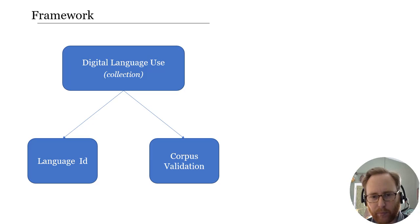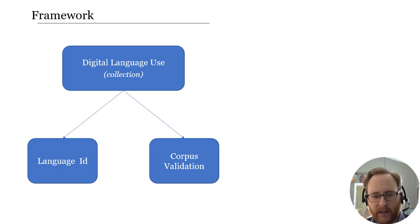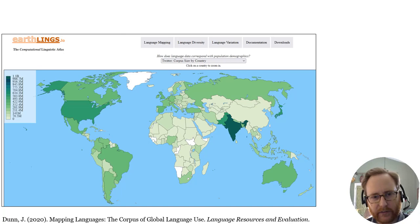This is especially important for low-resource languages where the sample we're observing is by definition a small, arbitrary sample. If we're dealing with English or French and have hundreds of billions of words available, we can be really picky about what samples we include to maintain high quality. But how do we do that for a language that only has a few million words? That's one of the key questions here.